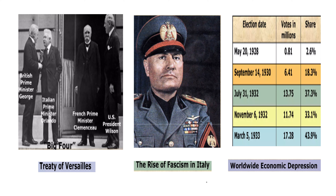The rise of fascism in Italy significantly contributed to the outbreak of World War II by altering the geopolitical landscape. Benito Mussolini, the leader of the National Fascist Party, sought to restore Italy's former glory and establish an Italian empire like the ancient Roman Empire. He advocated for territorial expansion and acquisition of territories with Italian-speaking populations. This expansionist ambition put Italy on a collision course with other major powers. The Great Depression of the 1930s also affected economies worldwide, causing unemployment, poverty, and political instability, contributing to the rise of extremist ideologies.